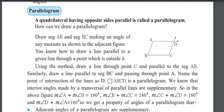Now, what is meant by a parallelogram? A quadrilateral having opposite sides parallel is called a parallelogram. Opposite sides means AD is parallel to BC, and AB is parallel to DC. Remember, opposite sides are also congruent — that is, AD is congruent to BC.